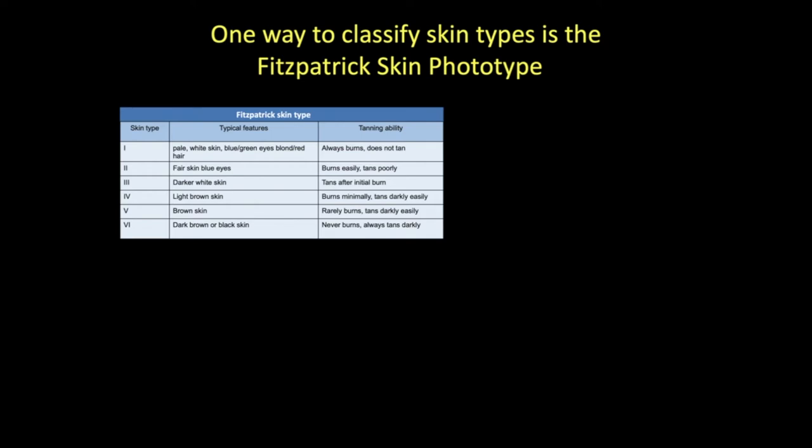The Fitzpatrick skin phototype describes a way to classify skin by both its reaction to exposure to sunlight and the amount of melanin pigment in the skin. This is determined by constitutional color—white, brown, or black skin—and the effect of exposure to UV radiation or tanning.